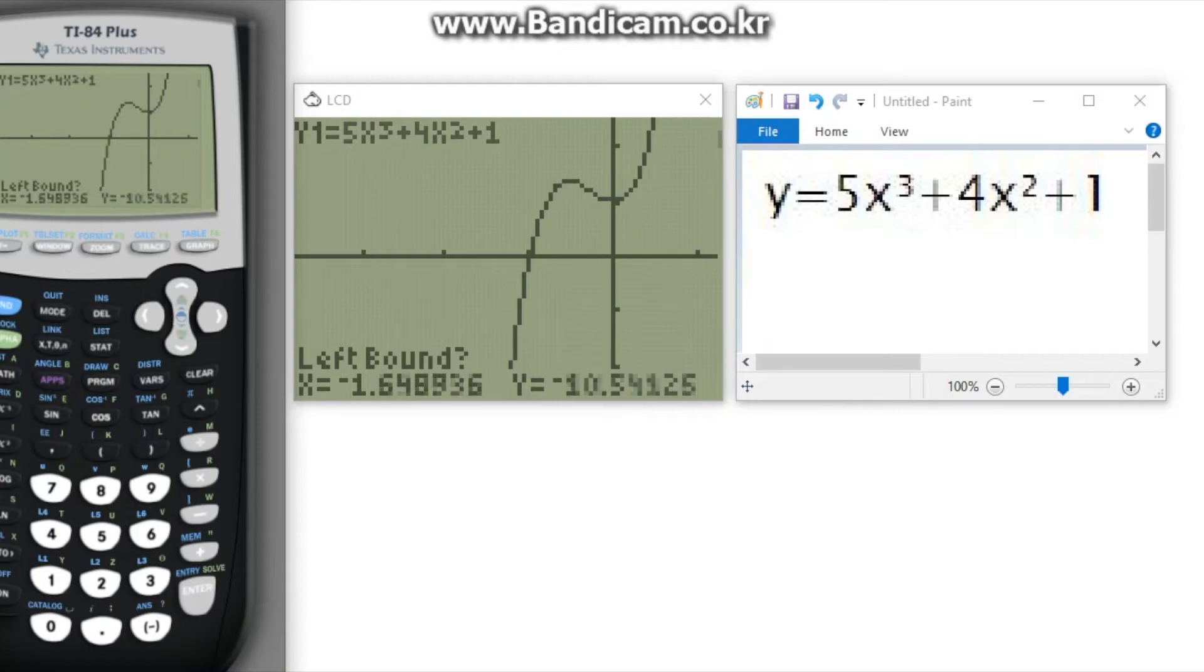Do the same for the right bound, finding a point above the x-axis and pressing enter. Press enter once again when asked yes and you will find the zero for this example to be at the point negative 1, zero.